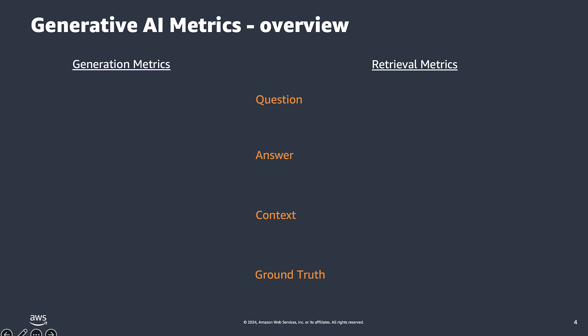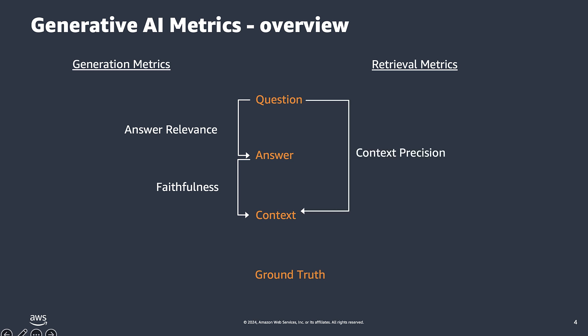Looking at generation metrics, we have answer relevance, which looks at if the answer is relevant to the question asked. We will also look at faithfulness, which looks at the answer to see if it accurately reflects the context given. On the right side, we have our retrieval metrics, including context precision, which looks at if the context is relevant to the question, and context recall, which looks at whether, based on the ground truth answer, the system can retrieve most of the relevant context available. Also not shown on this slide, we have our end-to-end metrics, including answer correctness, which compares the answer to the ground truth answer.